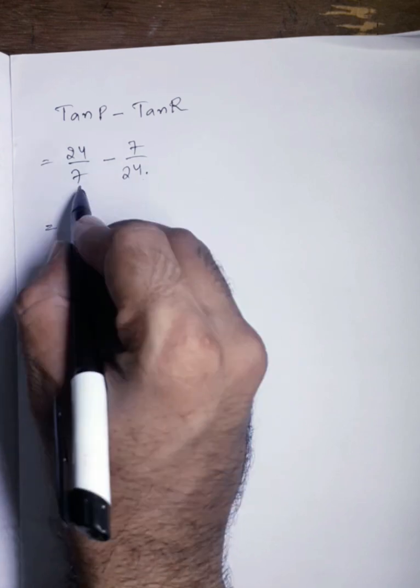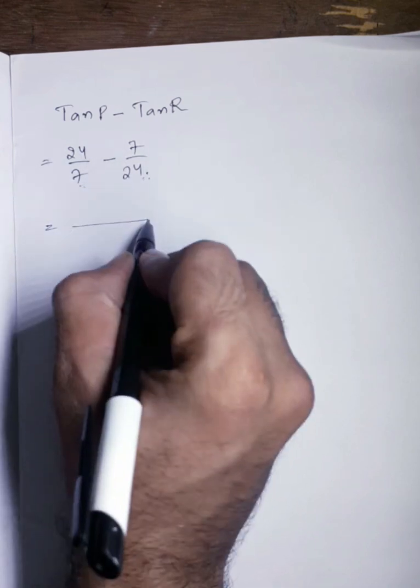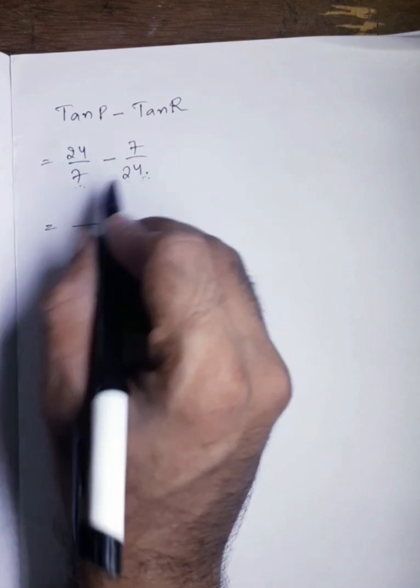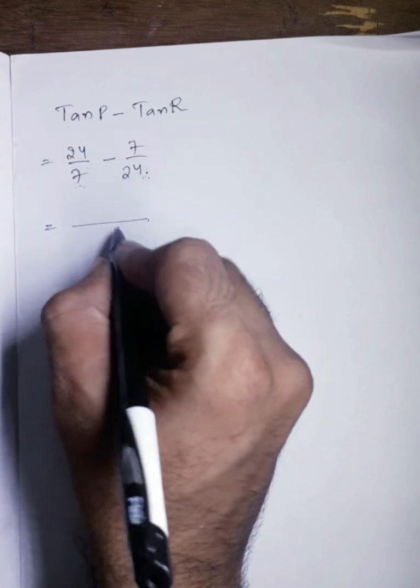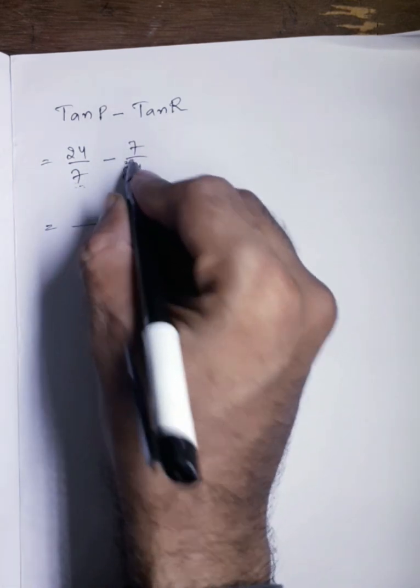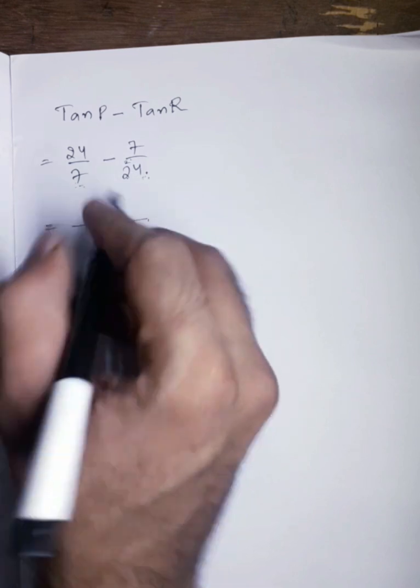We will take out the LCM of 7 and 24. For taking out the LCM, we will directly multiply 7 and 24. 7 times 24 is 168.